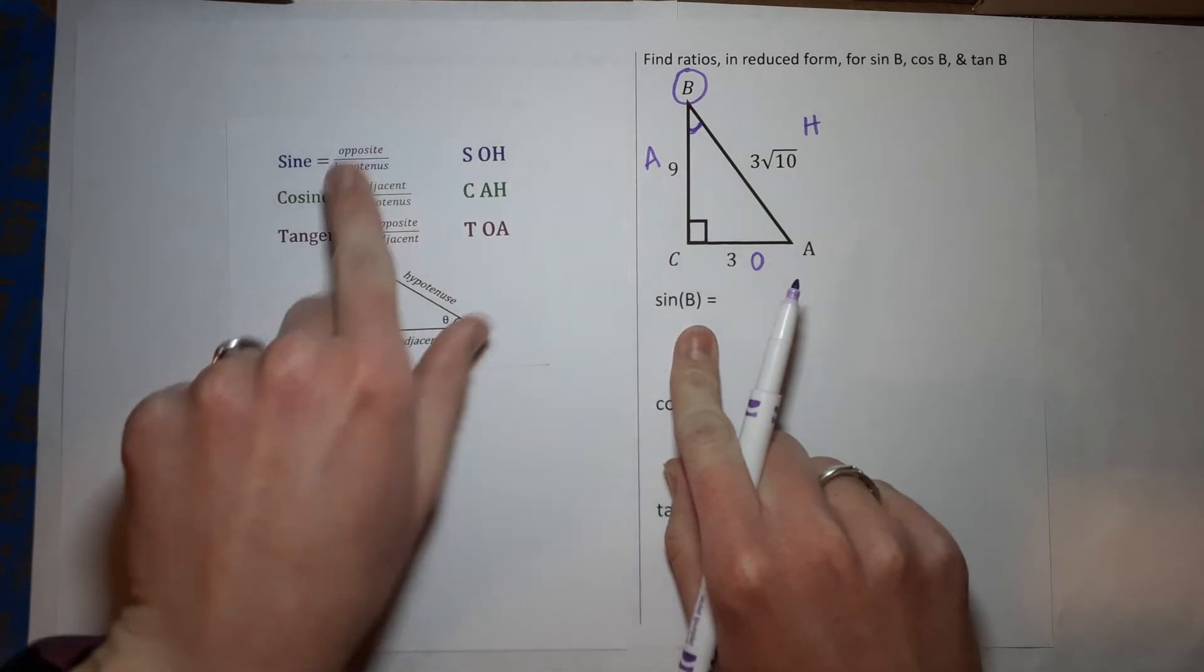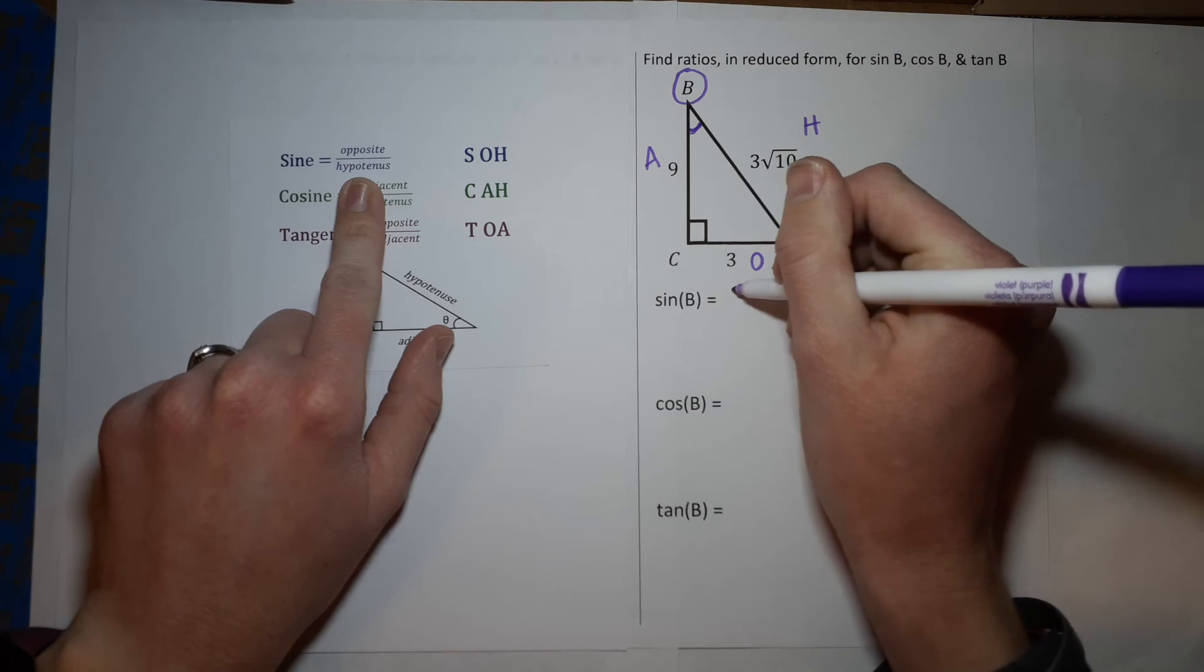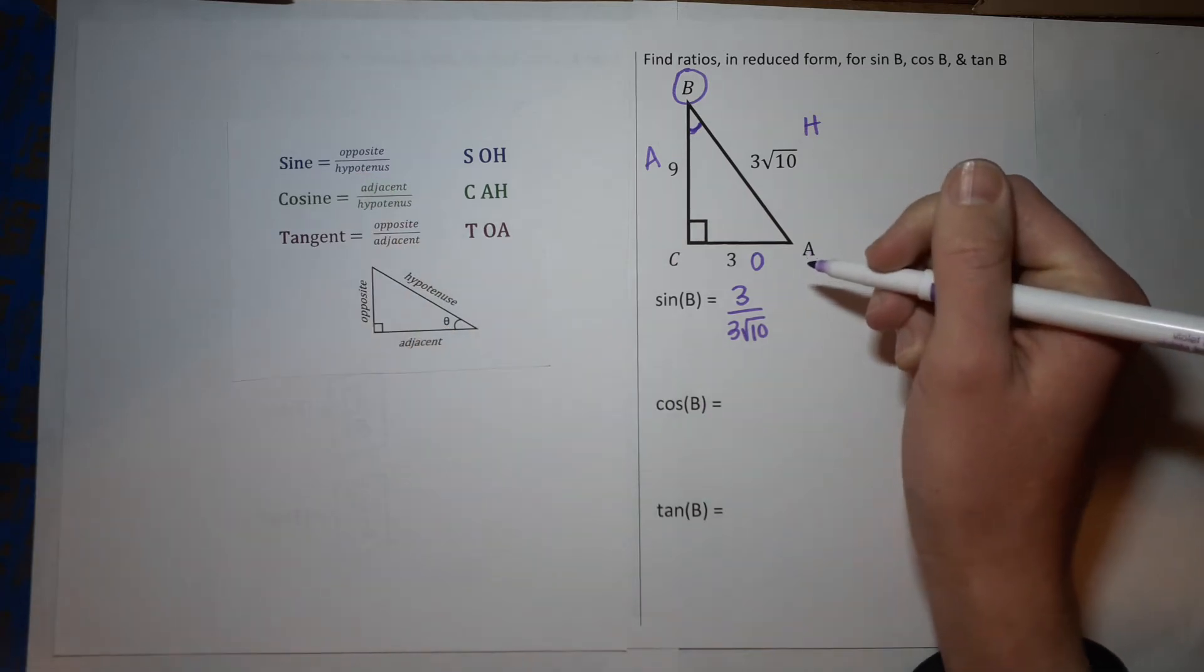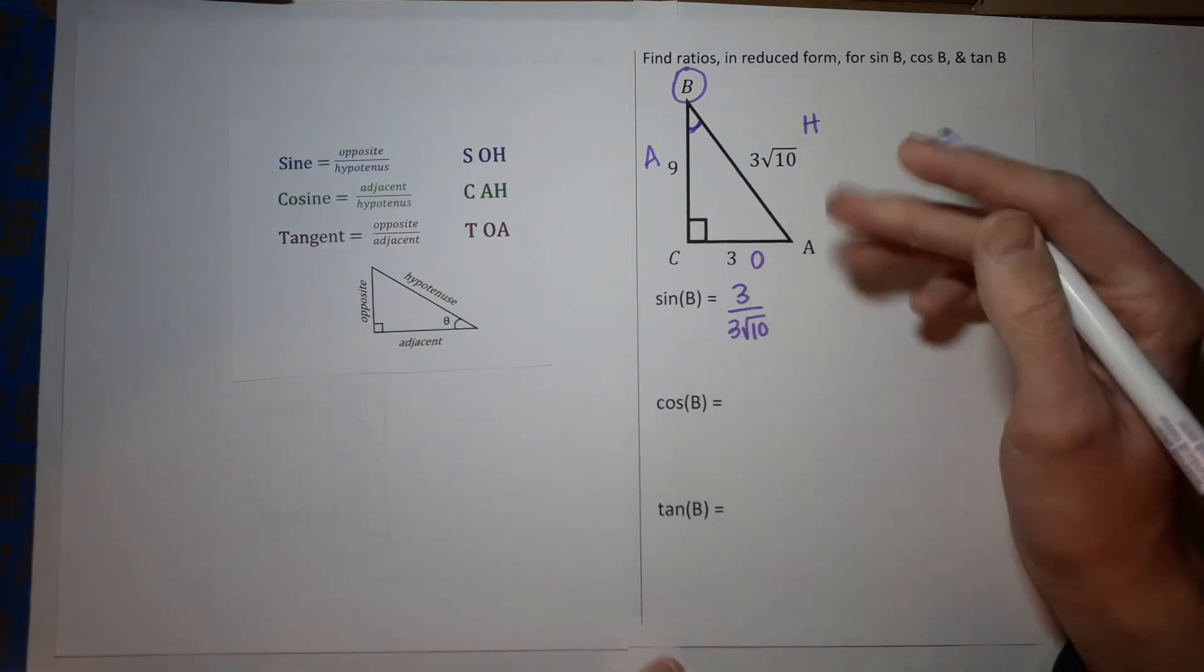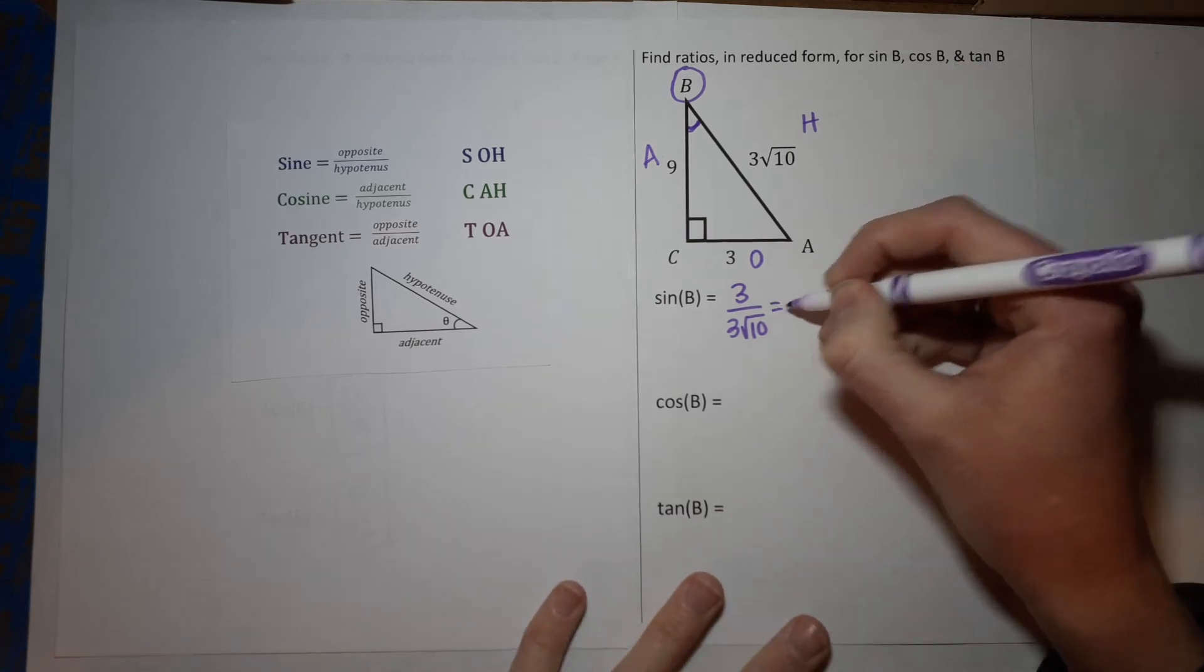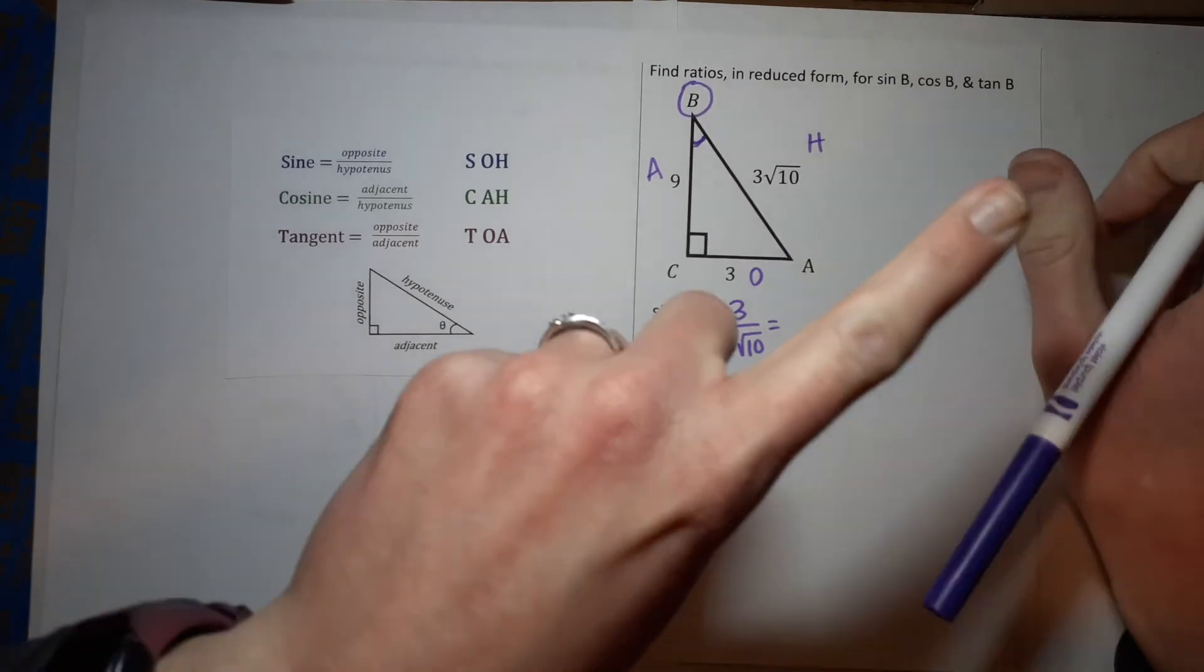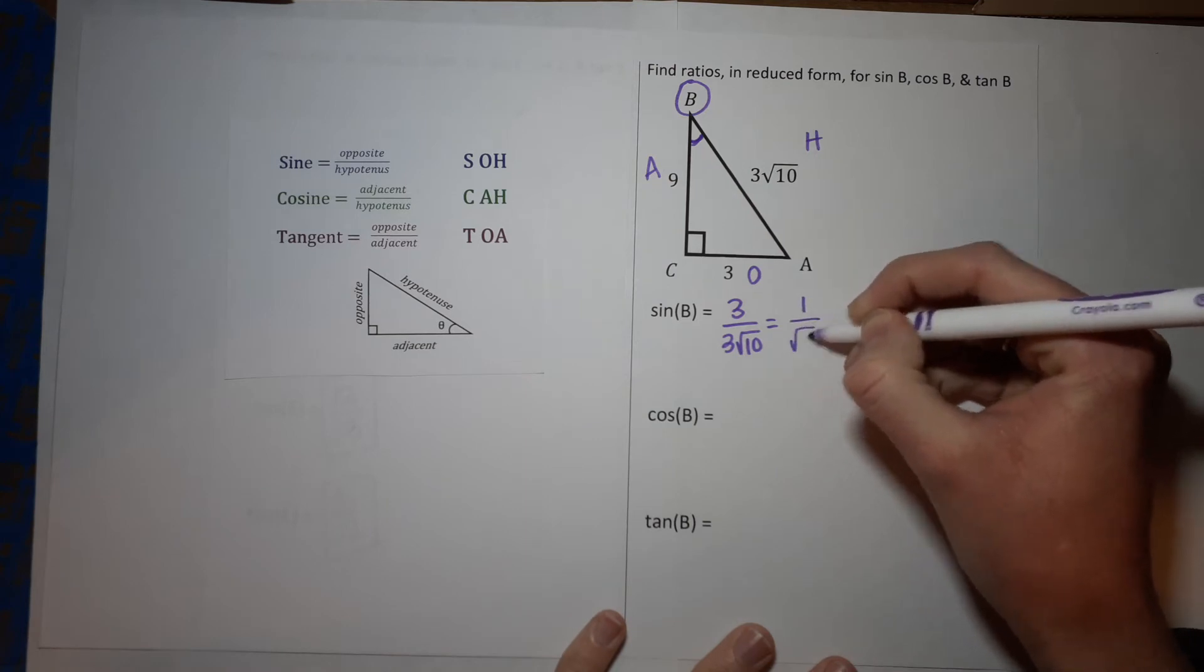The sine of B is opposite over hypotenuse. Opposite of B is 3, the hypotenuse is 3 square roots of 10. First thing I might notice is that 3 over 3 reduces to just 1, right? If you need a reminder on reducing fractions, I will link a video in the corner. So this simplifies to 1 over the square root of 10.